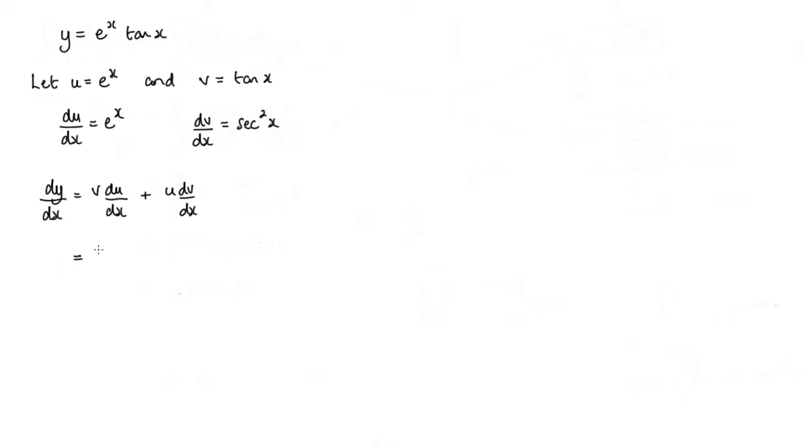Now we can pop in these substitutions, so we've got v being tan x and du dx being e to the x. So we've got e to the x tan x plus u dv dx. So u is e to the x and we've got sec squared x here, so it's e to the x sec squared x.